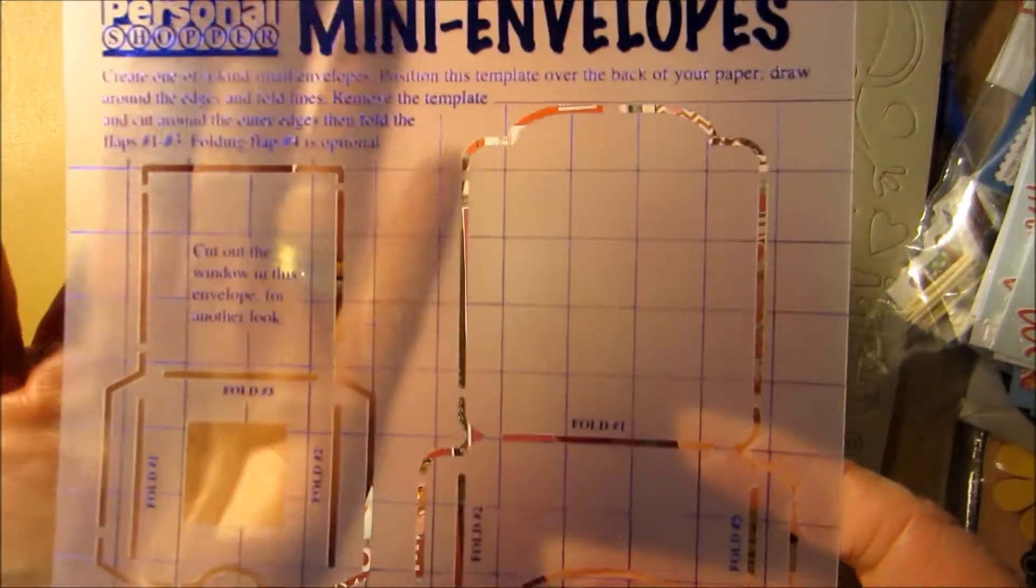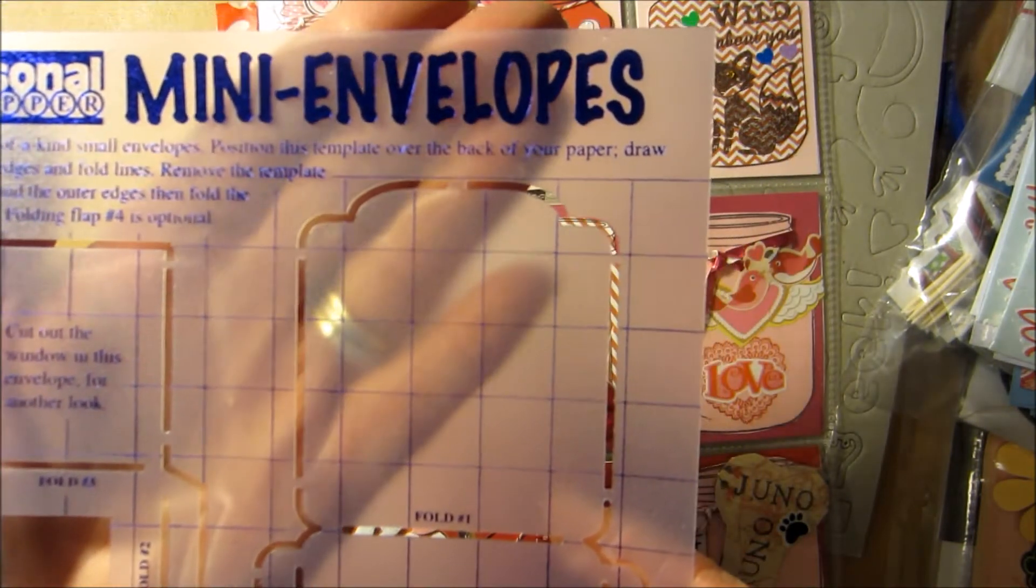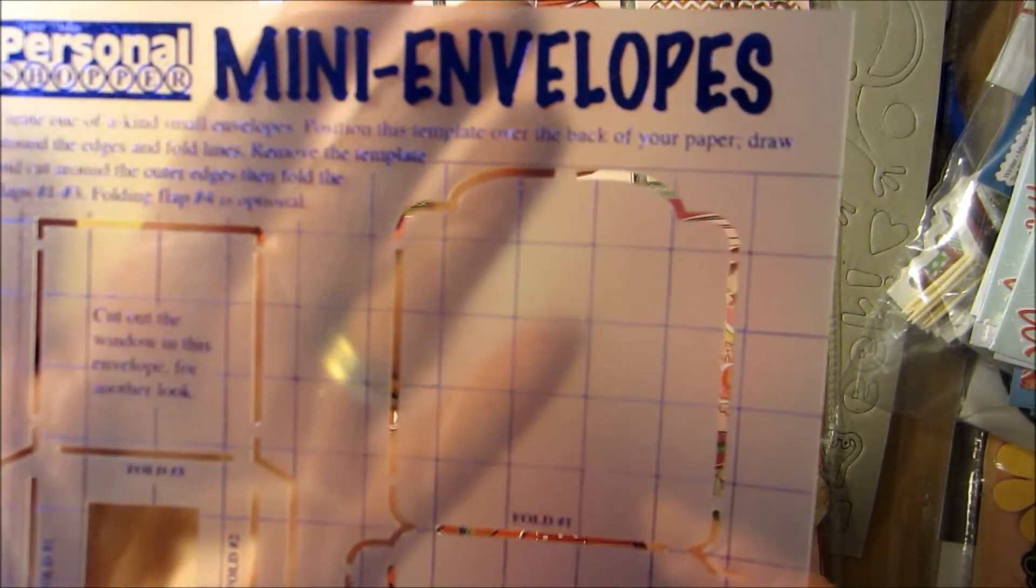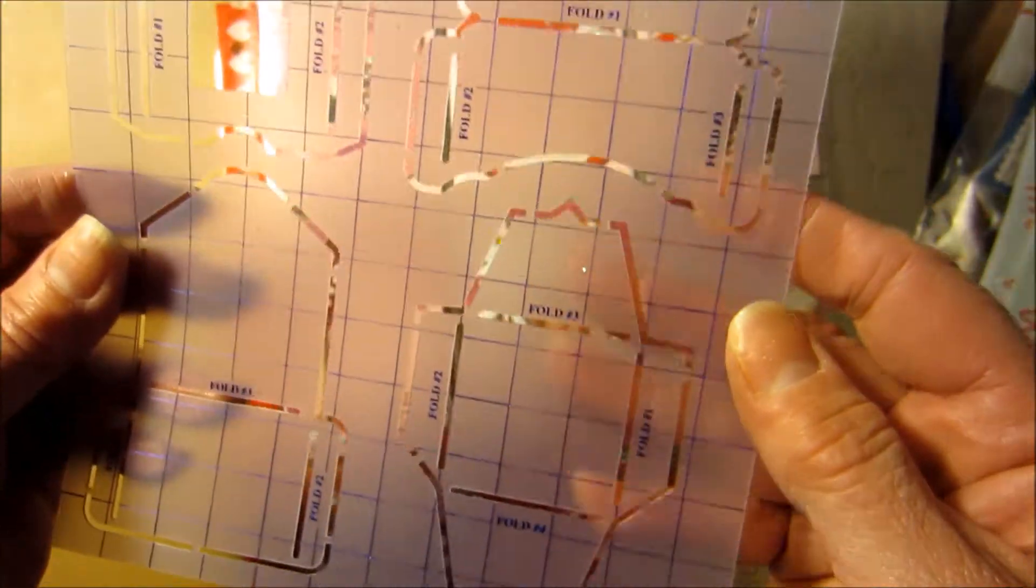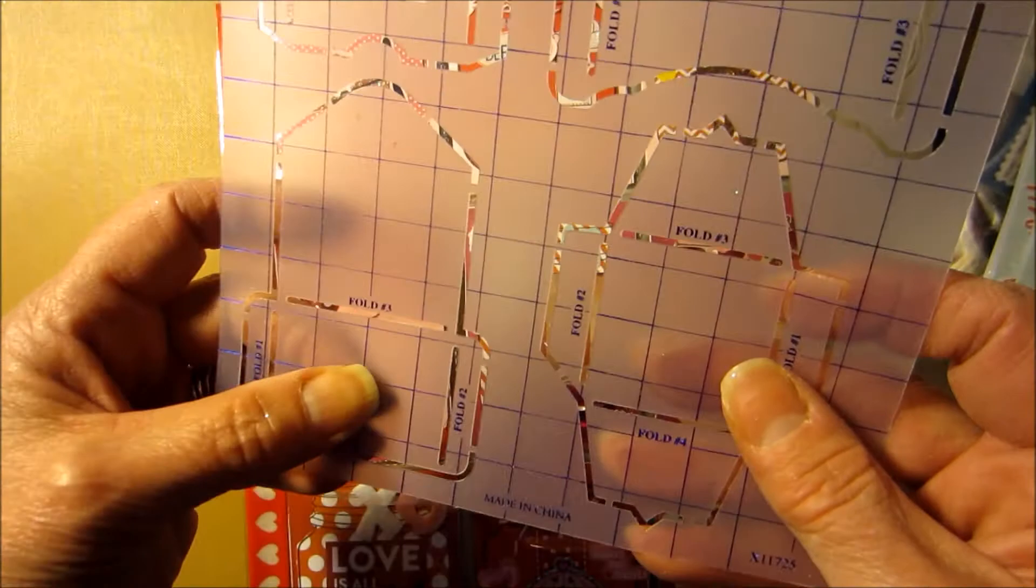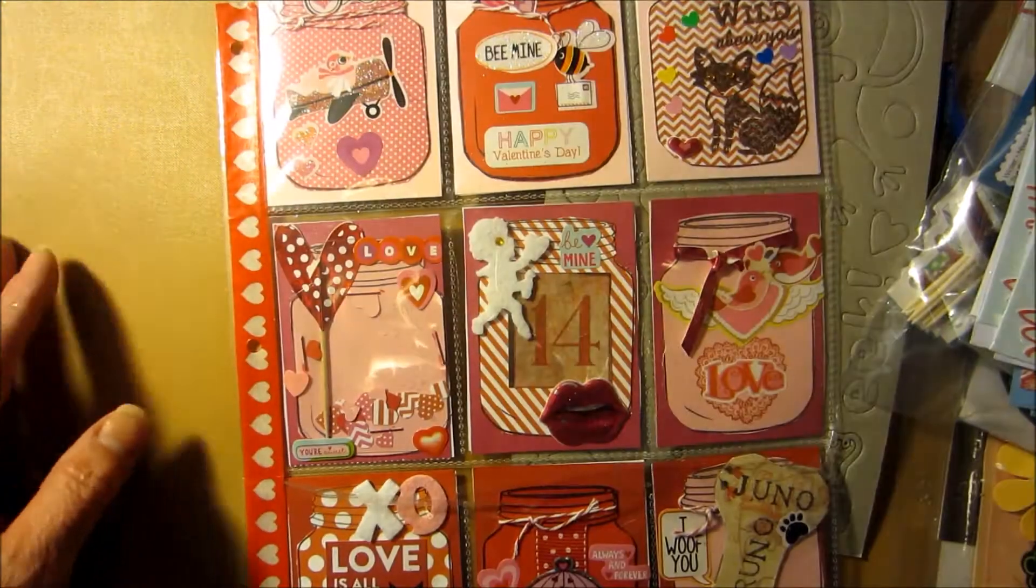And then, oh, look at this. Mini envelopes. Create one-of-a-kind small envelopes. Put the template over the back of your paper. Draw around the edges and fold the lines. Remove the template and cut around the edges. That is so cool. Perfect for pocket letters, you guys. Very cool. Thank you, Chris.